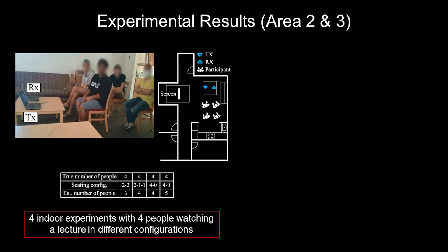In this indoor apartment, we ran 4 experiments where 4 people sat together in different seating configurations to watch a lecture. We can see that the counting error is zero or only one person in all experiments in this indoor area.